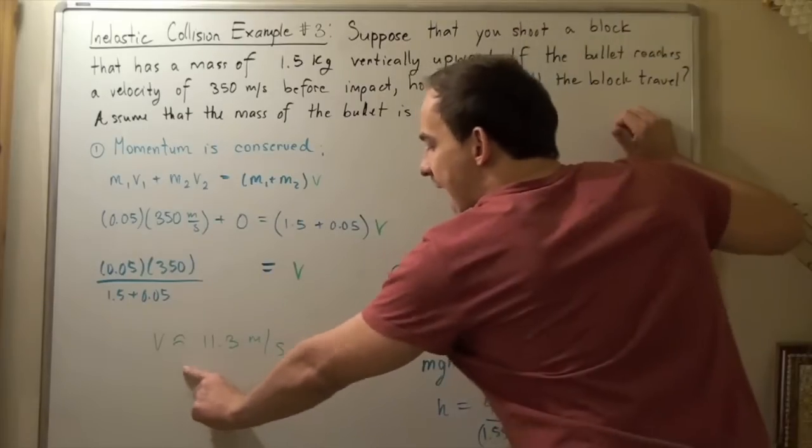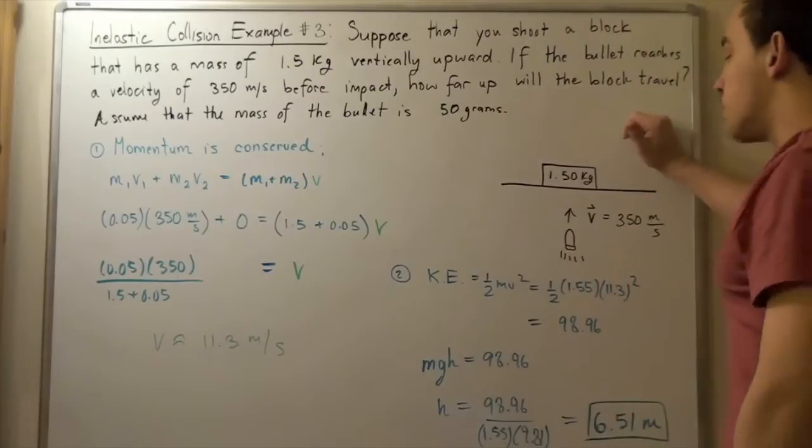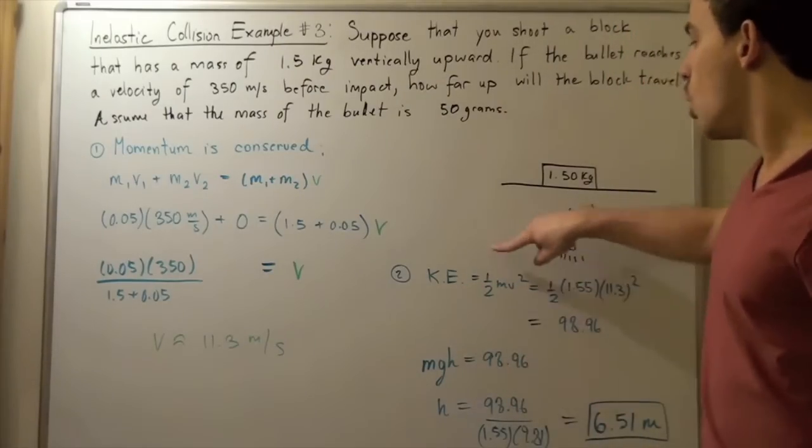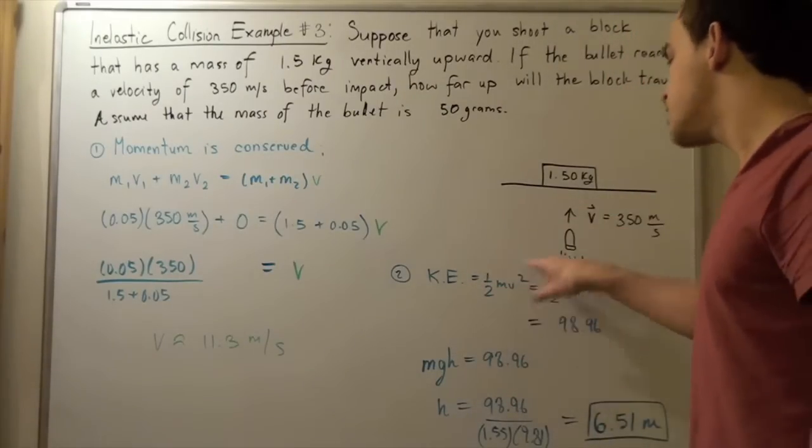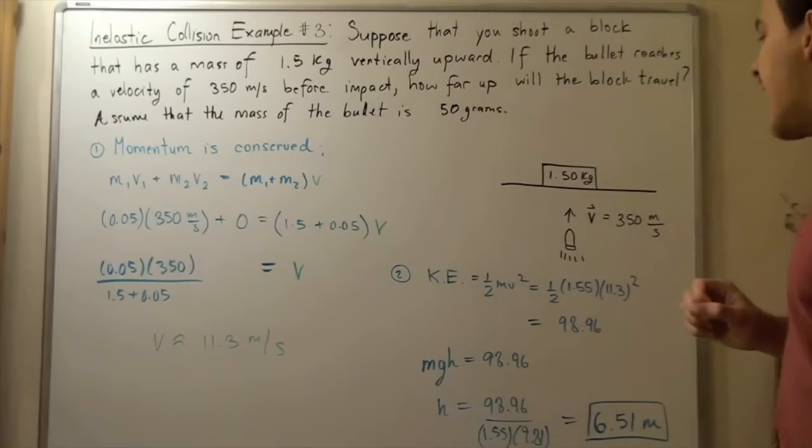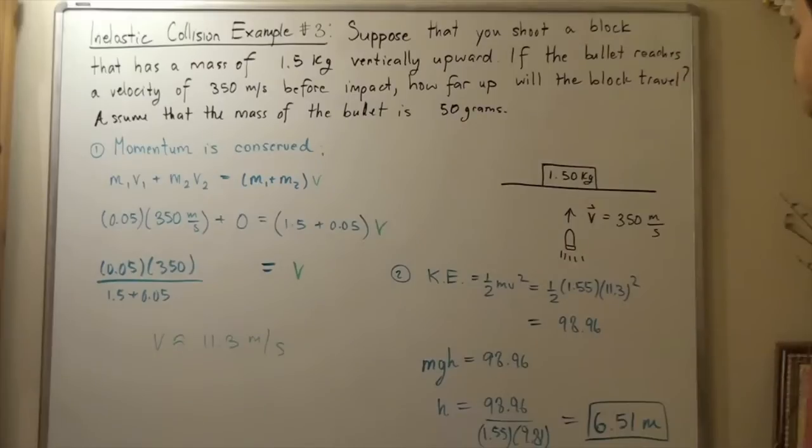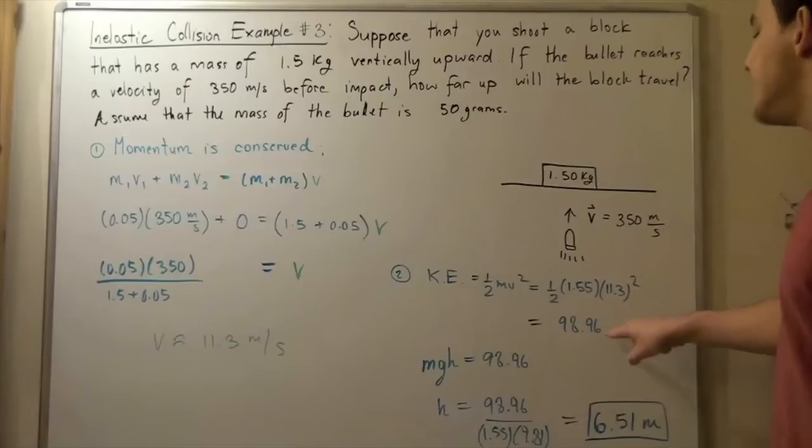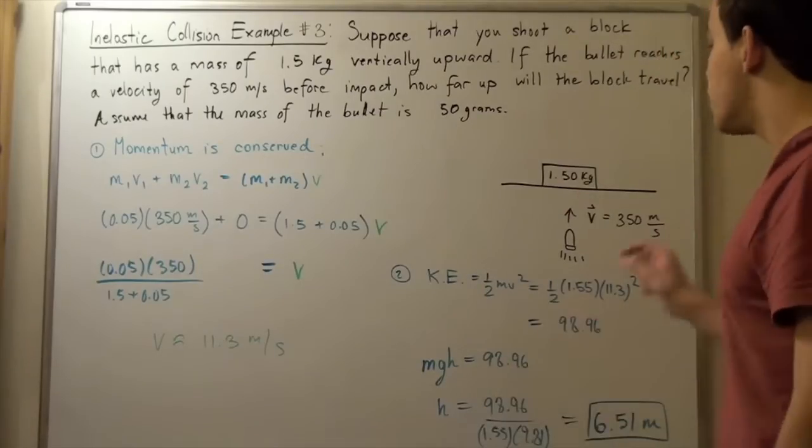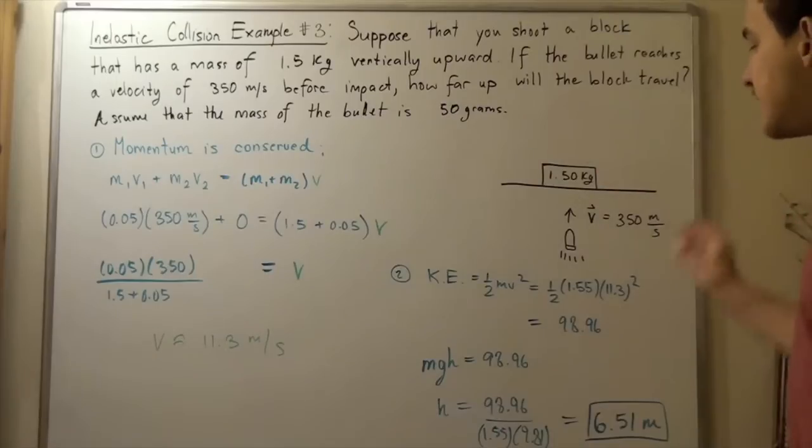First we have to find how much kinetic energy this velocity represents. Kinetic energy equals 0.5 times m times v squared. Our block plus the bullet has a mass of 1.55 kilograms multiplied by the square of 11.3, and we get 98.96 joules. That's how much kinetic energy our system has initially.